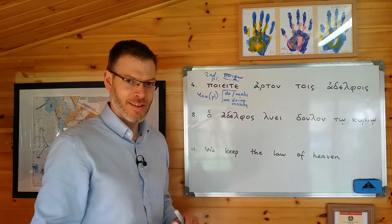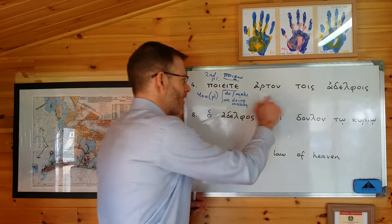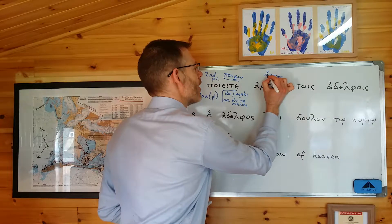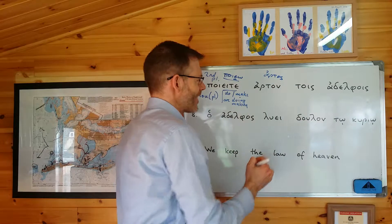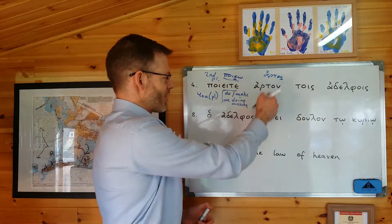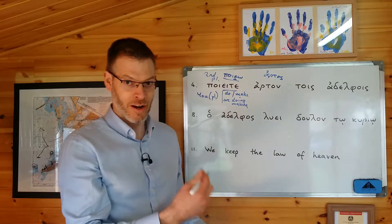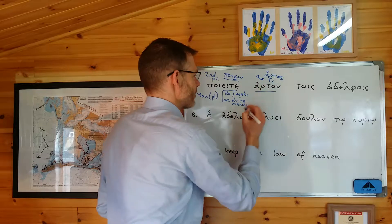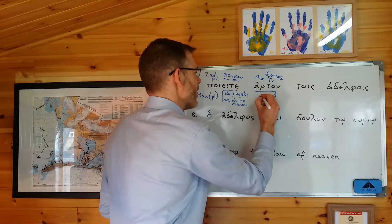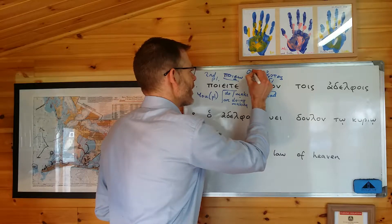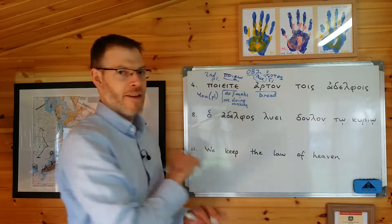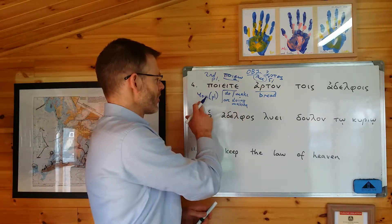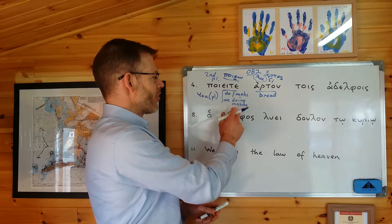Where is the noun in the accusative case? Can you find it? Of course you can — it's arton. It comes from the word artos, meaning bread. So artos, arton, artou, artō, artoi, artois — arton is accusative singular, and so it just means bread. Maybe you want to put a little circle around that and remind yourself that it's the object. Just never be afraid to write down your working — scribble all over the sheet.